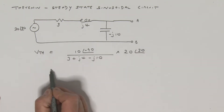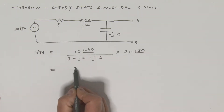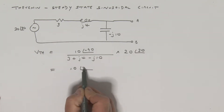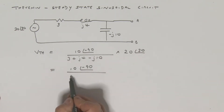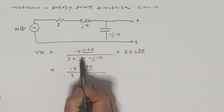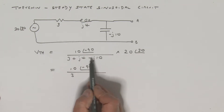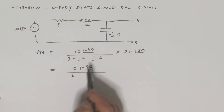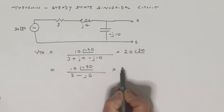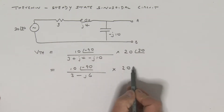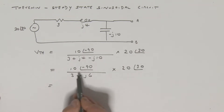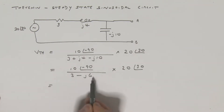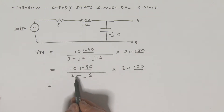Let's go a little further with this. This Thevenin voltage then is 10 at angle minus 90. What do we have here? Well, we have a 3, plus J4, and minus J10. So that's minus J6. And that, of course, is multiplied by my source, 20 at an angle of 30.